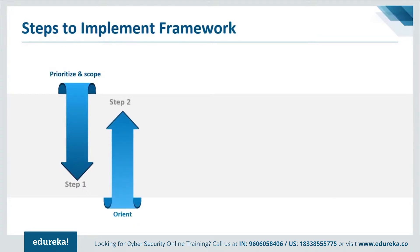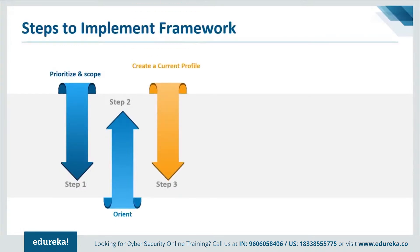Step 2 is to Orient. Once the scope of the cybersecurity program has been determined for the business line or process, the organization identifies related systems and assets, regulatory requirements, and the overall risk approach. The organization then consults sources to identify threats and vulnerabilities applicable to those systems and assets. Step 3 is to Create a Current Profile: the organization develops a current profile by indicating which category and subcategory outcomes from the framework Core are currently being achieved. If an outcome is only partially achieved, noting this will help support subsequent steps by providing baseline information.